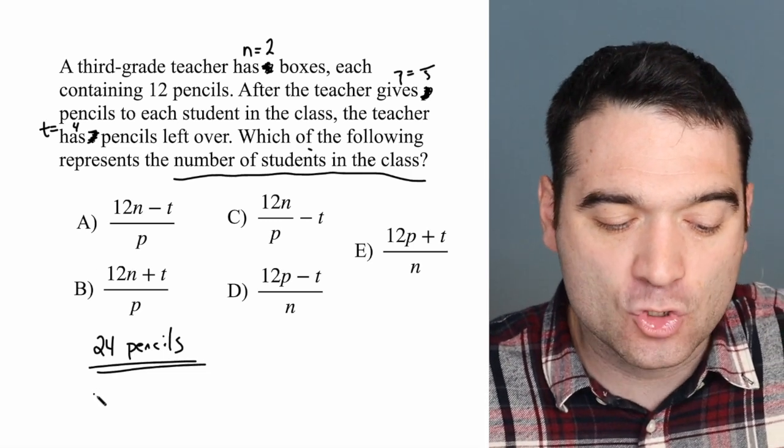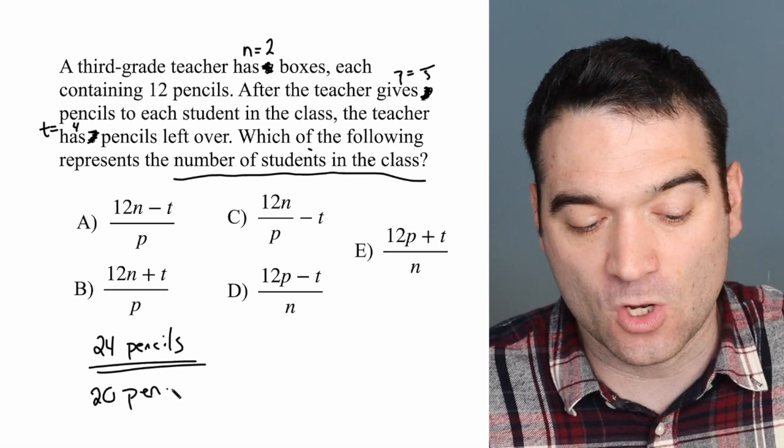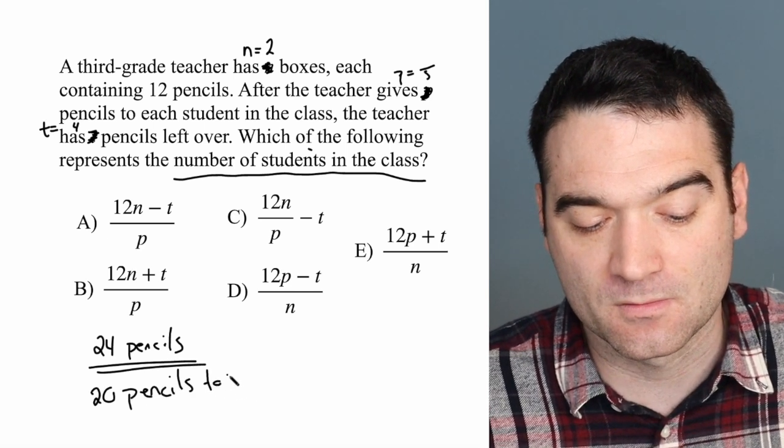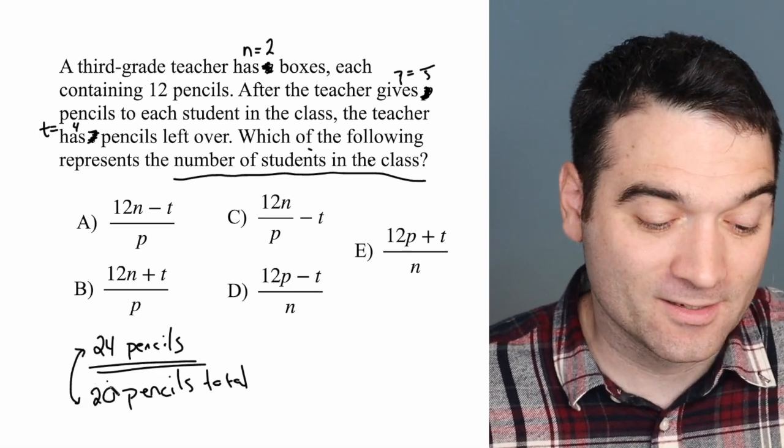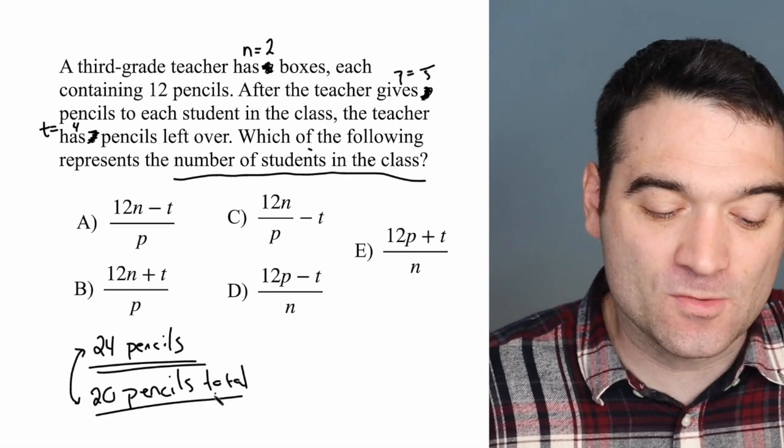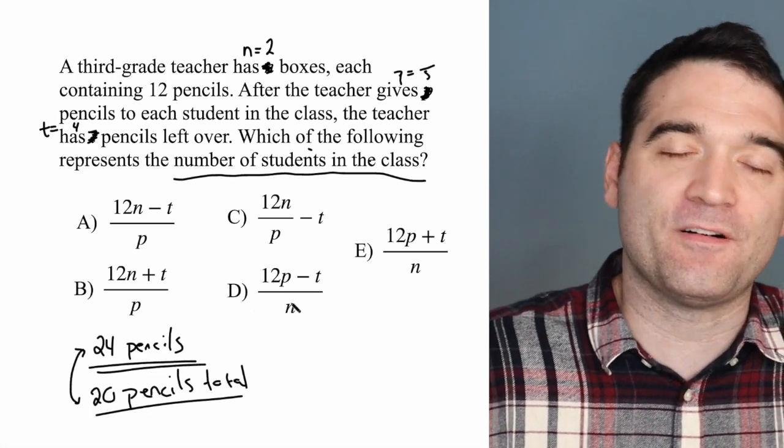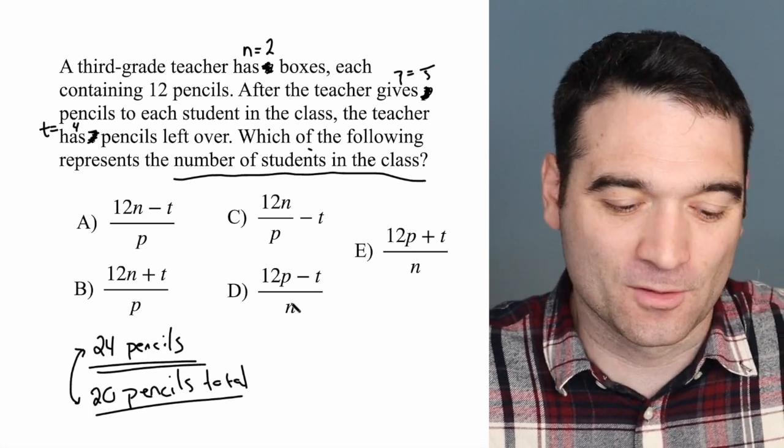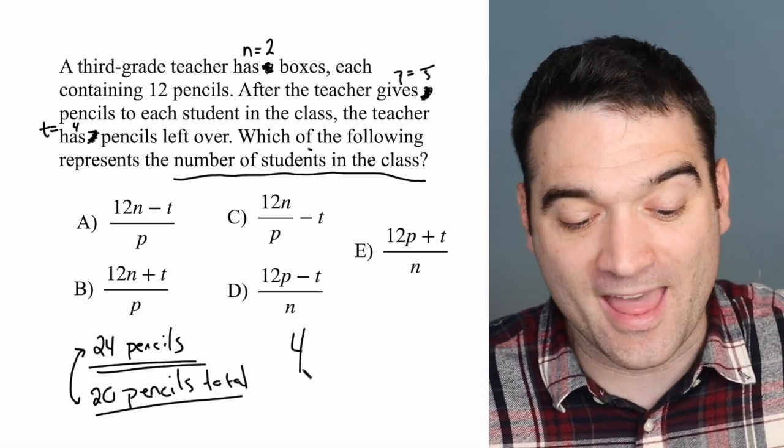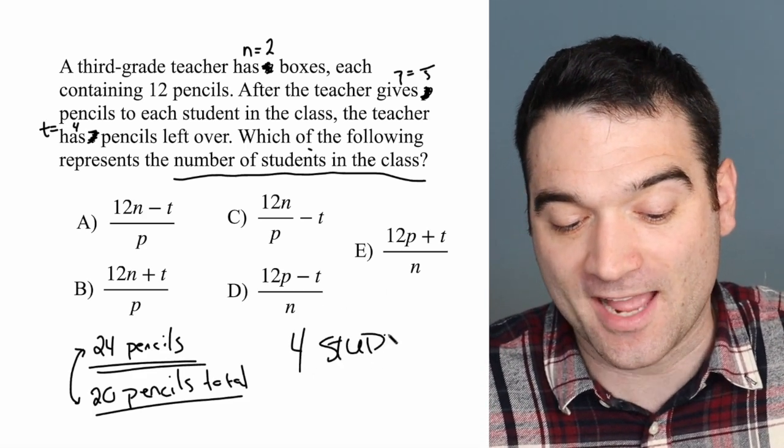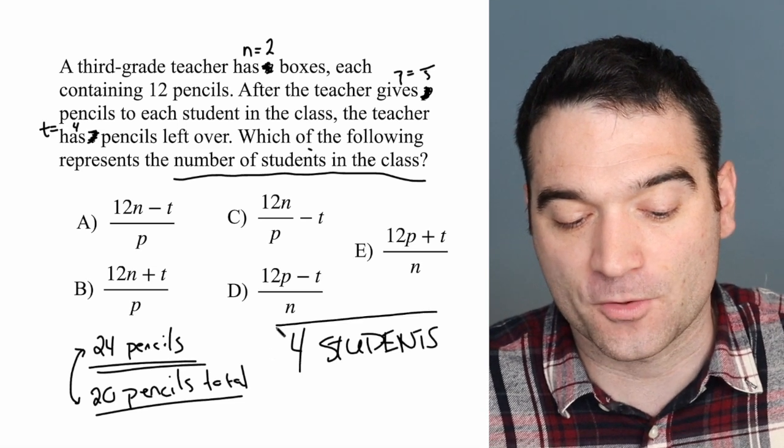Well, that means that I gave 20 pencils total to all the students. And the gap here was four left over. How many students, then, do I have in this class? If I gave five pencils to each student and I gave out a total of 20 pencils, well, that means that there were four students. That is the answer to the question that they asked. So I'll write it right here. There are four students.